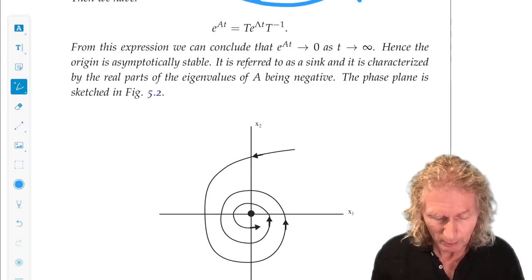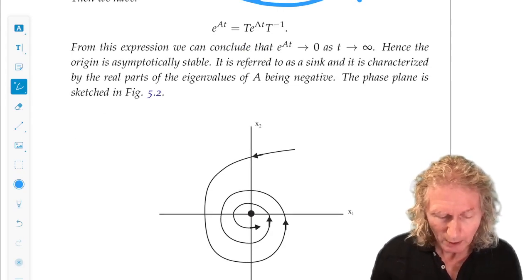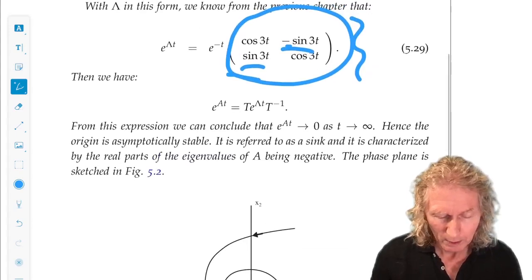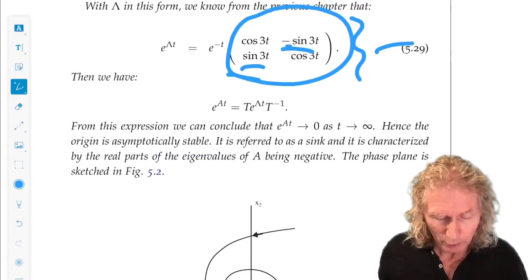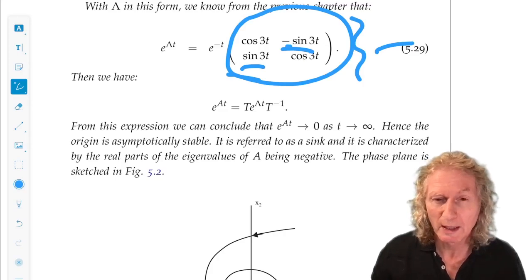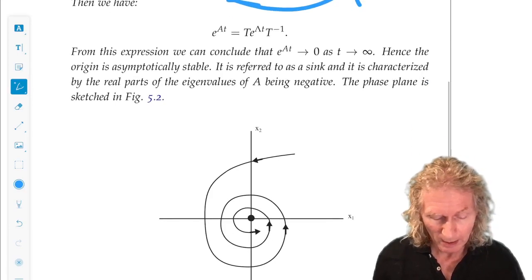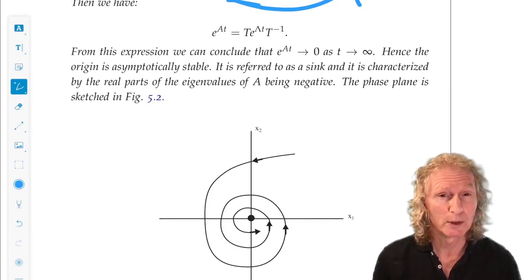But, the picture we have for the phase portrait should be familiar. From this, we have trajectories rotating around the origin but then decaying to zero as they rotate around at an exponential rate.